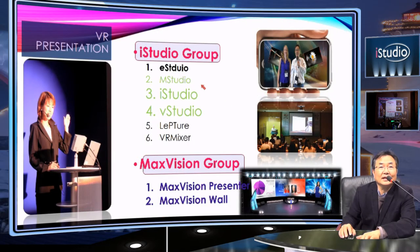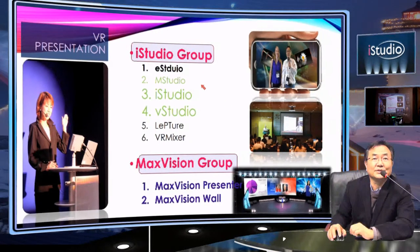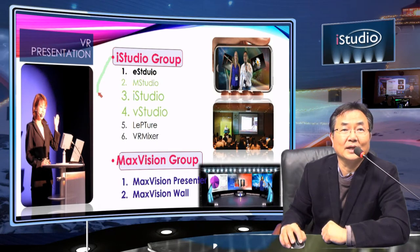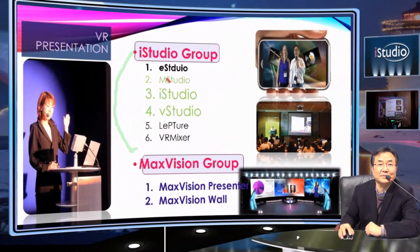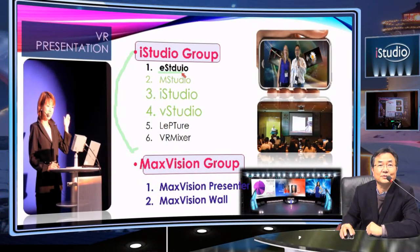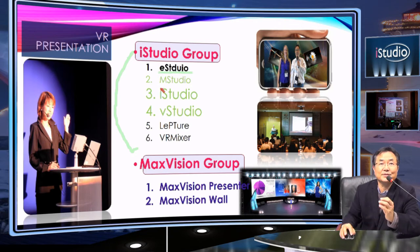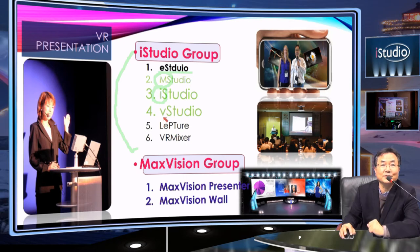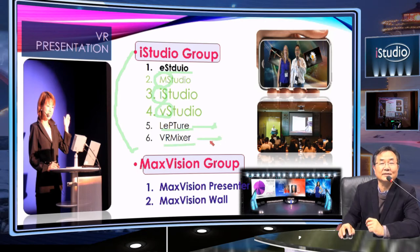That's what we call MaxVision presentation. iStudio does presentation over the smart world, while MaxVision makes an efficient way of presentation in large conference halls. So the product line we are showing has two groups: iStudio group and MaxVision group. The iStudio group consists of E-Studio, which is personal studio, iStudio which is also personal studio as I am doing, and iStudio as TV studio — lecture capture in the classroom — and VL mixer for events.